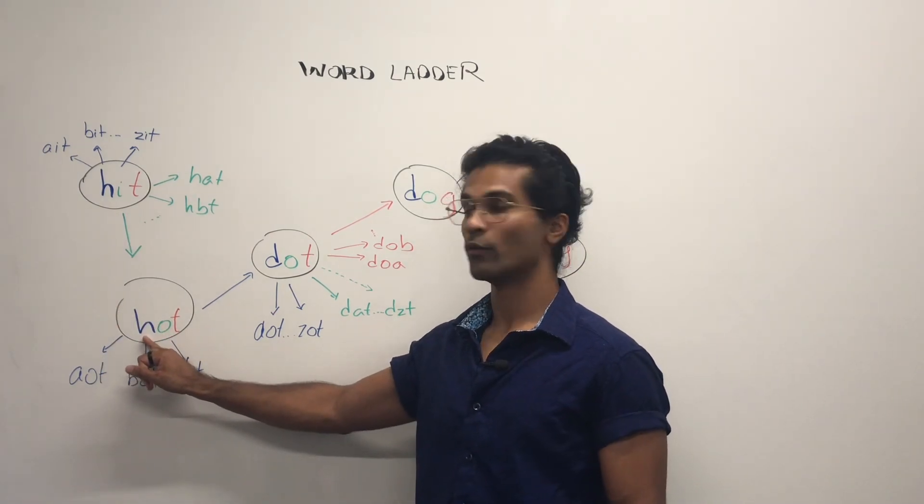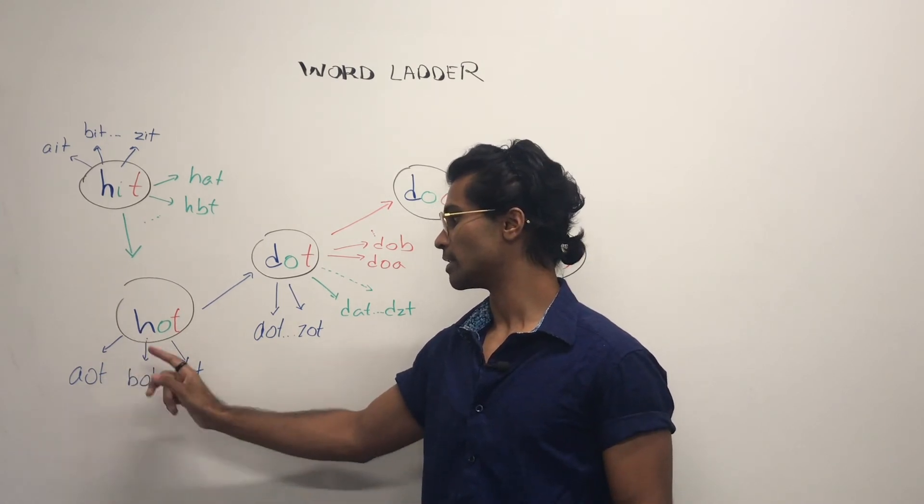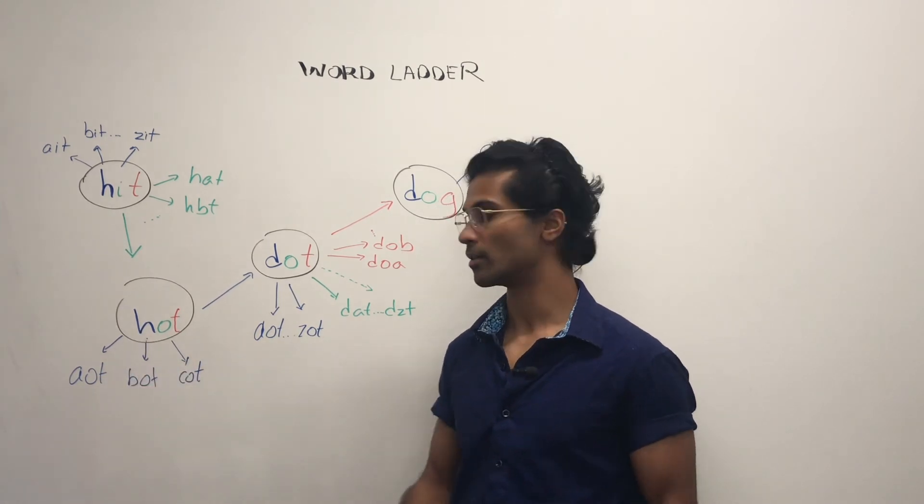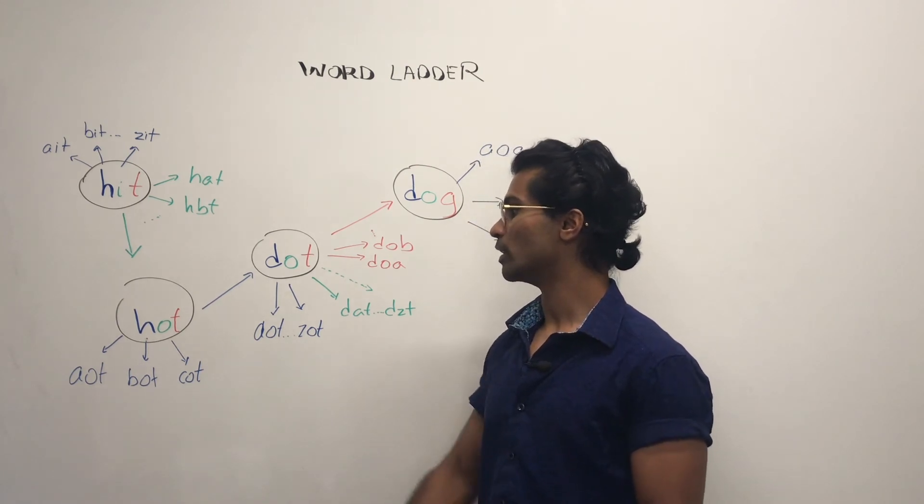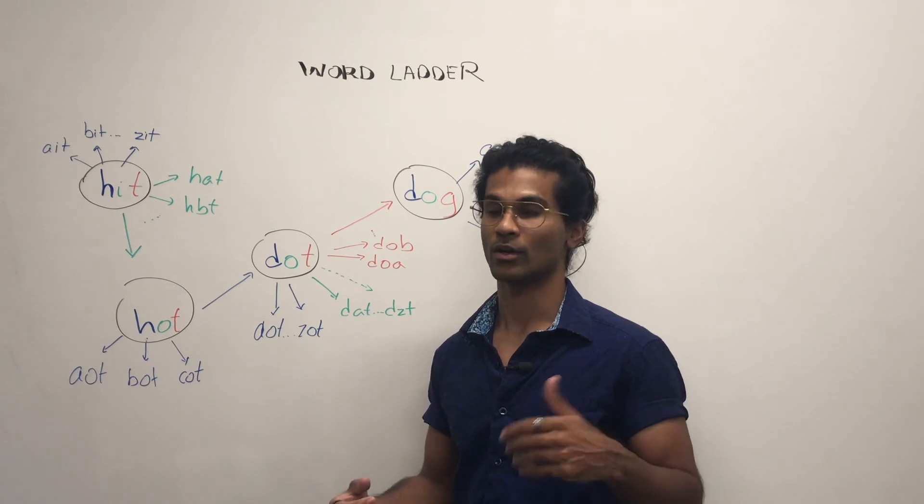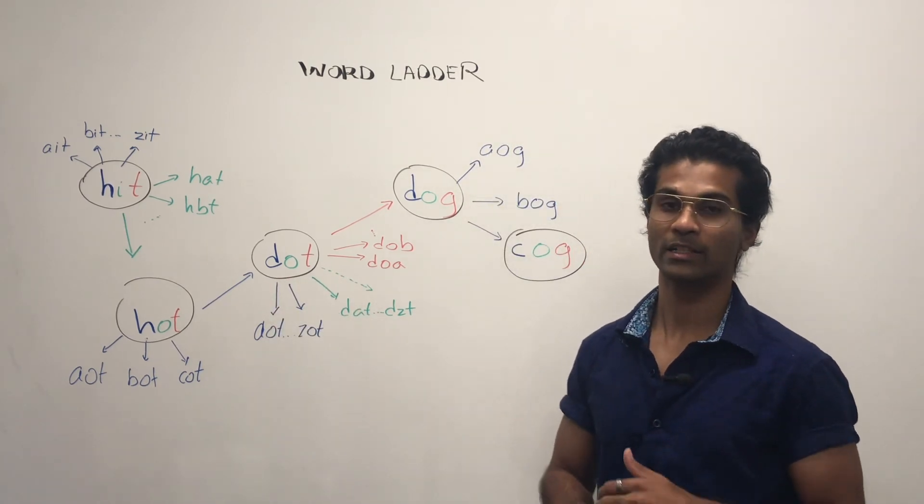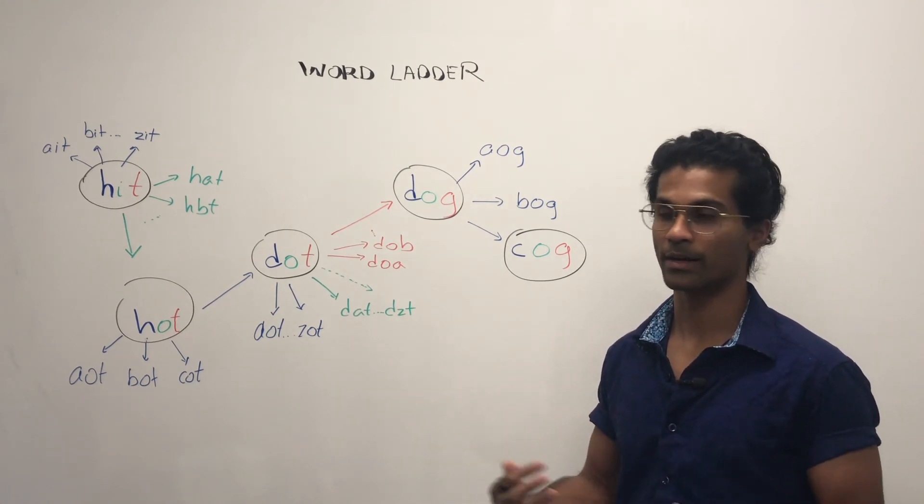Once again we go from H and we generate its neighbors. AOT, BOT, COT etc. Next we get DOT because that's a valid word in our list and we can put it in the queue and it's going to be another layer in our word ladder.